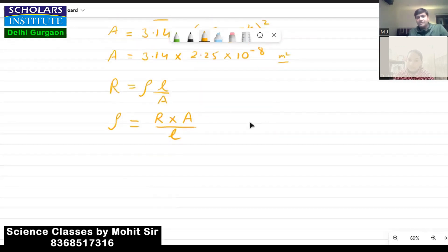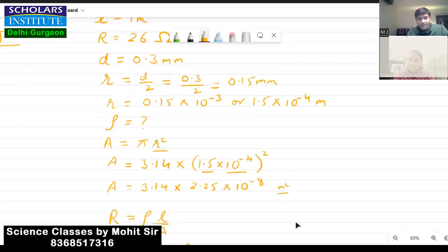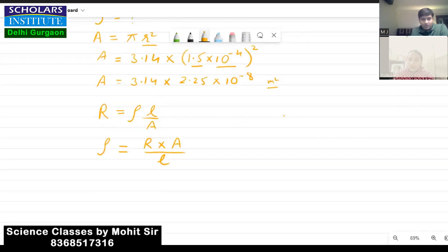Okay, resistance is given as how much is the resistance given, 26 ohm. So rho will be equal to 26 multiplied by 3.14 into 2.25 into 10 to the power minus 8.